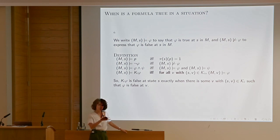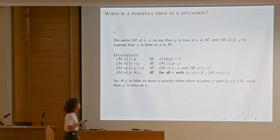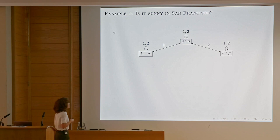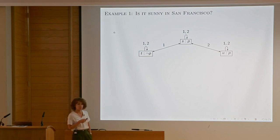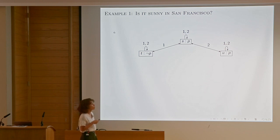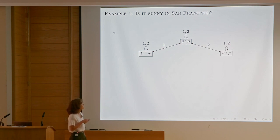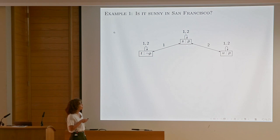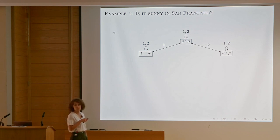It's really the K_i relations that are part of the model — you fix them externally. That's the main task of the modeler. Is it sunny in San Francisco? We have two agents now. P stands for sunny in San Francisco. In this state, agent one considers it possible that it's not sunny in San Francisco — so agent one does not know. Agent two actually knows it's sunny in San Francisco because for both worlds accessible to him, it's sunny there.